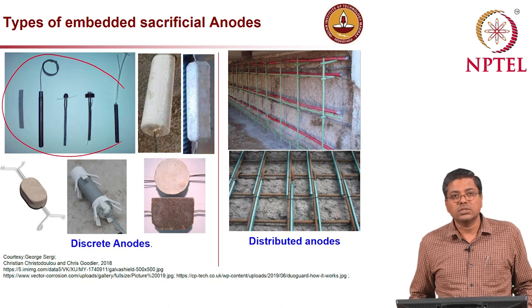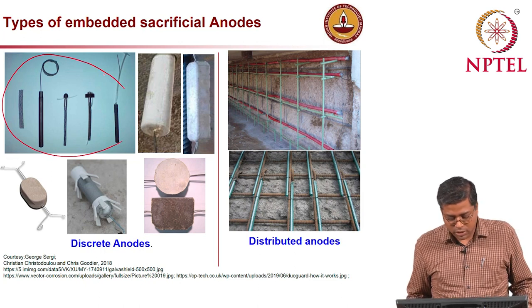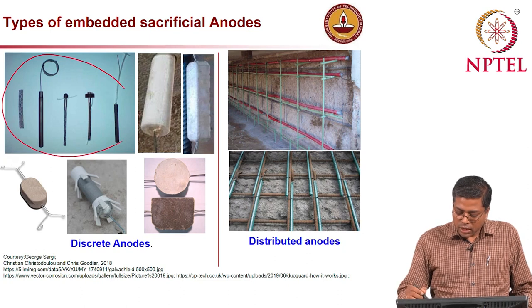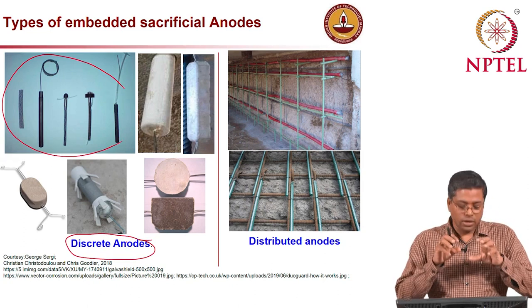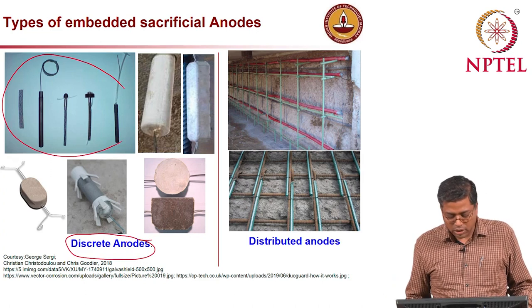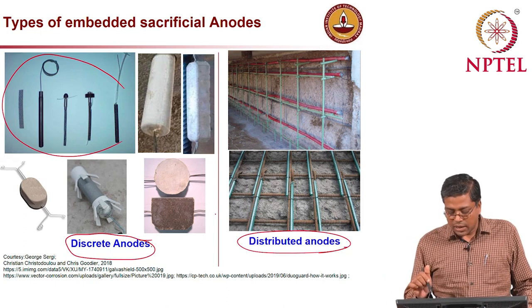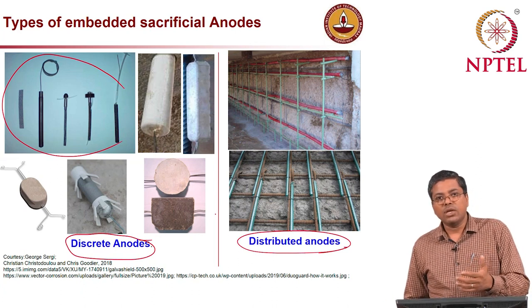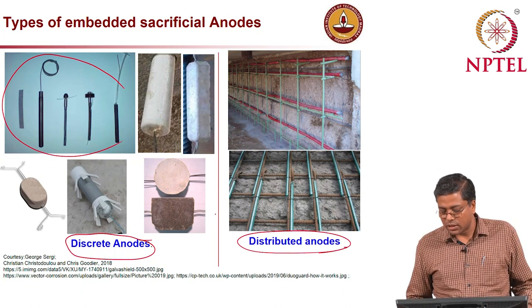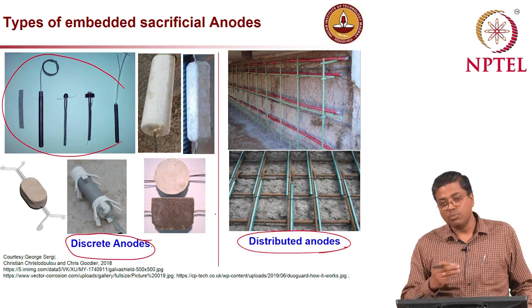Sacrificial anode systems have an advantage over impressed current systems in terms of vandalism: no external rectifier boxes are visible or accessible. Discrete anodes can be installed in drilled holes at various locations; distributed anodes are connected parallel to the rebar and work well with coated rebar systems, where damage locations are unknown. A long strip-like anode can be installed and the structure protected for the long term.